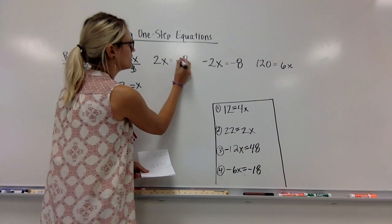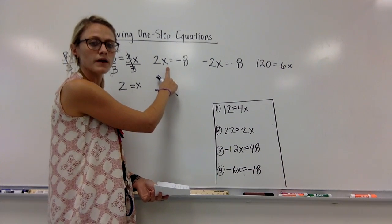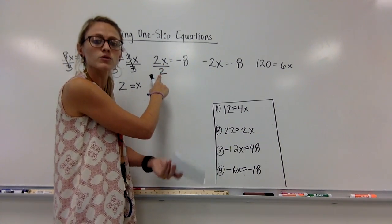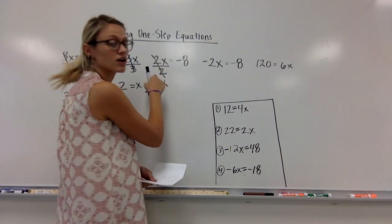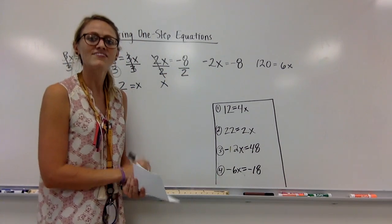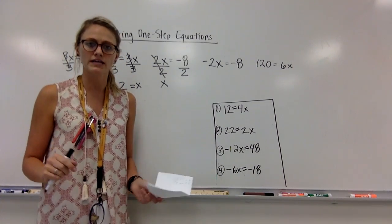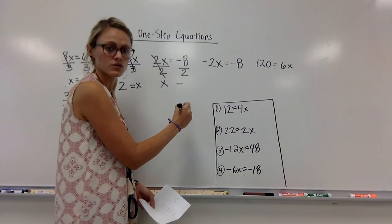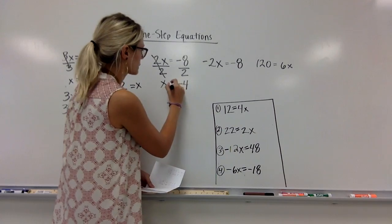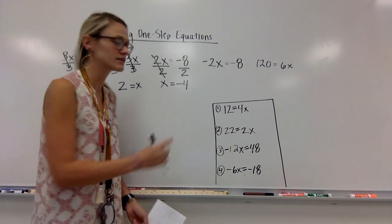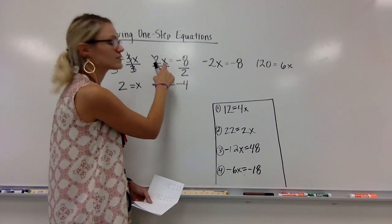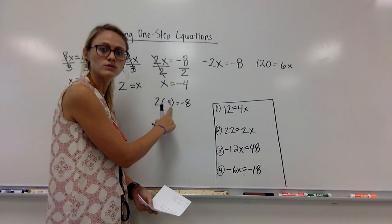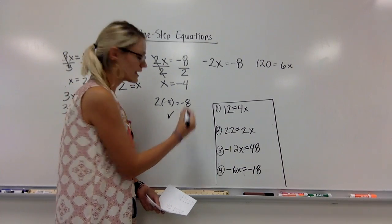Next one: 2x equals negative 8. Same deal — the 2 is being multiplied by x, I need to undo that. Opposite of multiplication is division. It's being multiplied by 2, so I'm going to divide. 2 divided by 2 is 1, that leaves me with just x. I did it on this side, so I've got to do it on the other. I have a negative divided by a positive — same rules as multiplication. A negative divided by a positive is a negative. So negative 8 divided by positive 2 is negative 4. To check: 2 times negative 4 equals negative 8. A positive 2 times a negative 4 equals a negative 8. Correct.